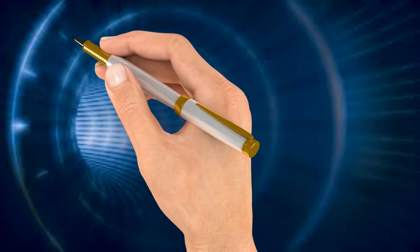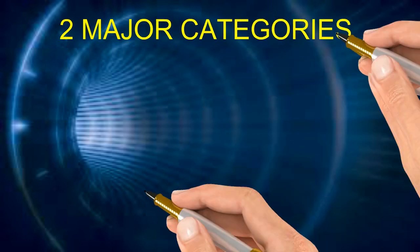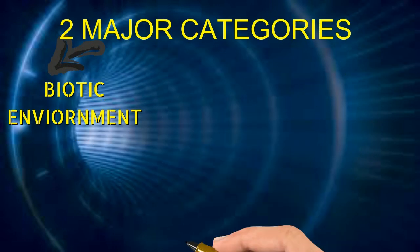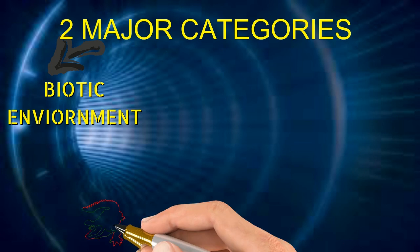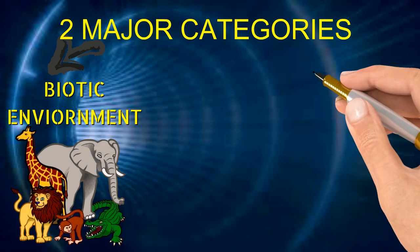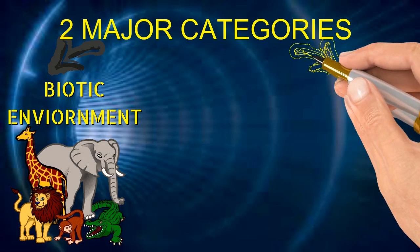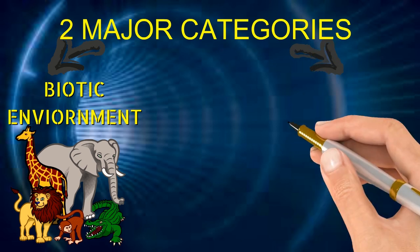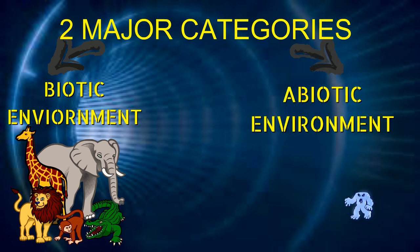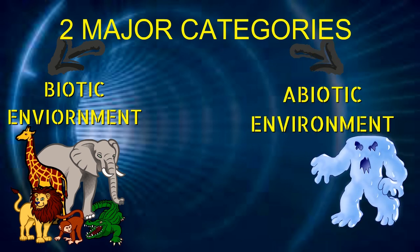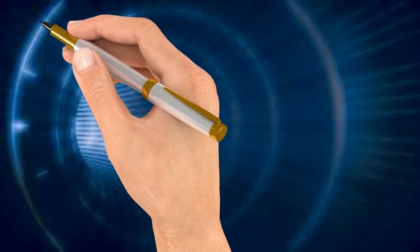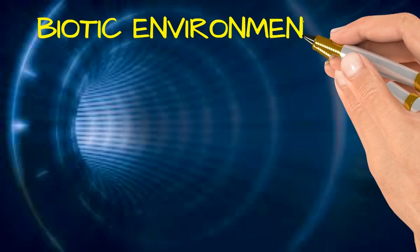Environment is majorly categorized in two forms: biotic environment, which constitutes all living organisms and plants, and abiotic environment, which includes water, air, land, and sun. Let's discuss biotic environment.